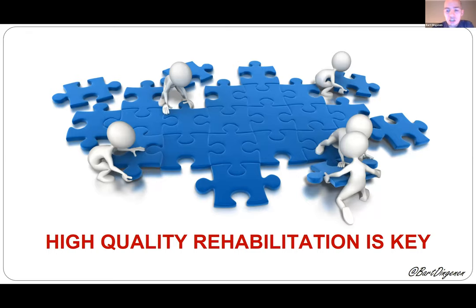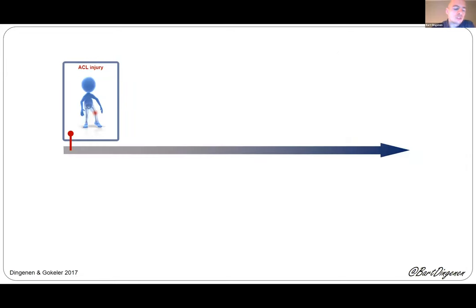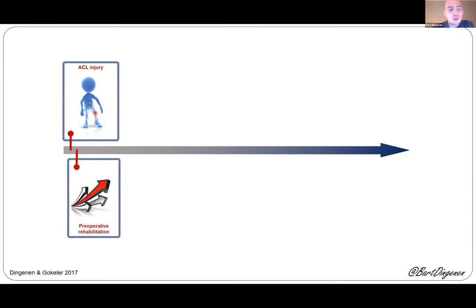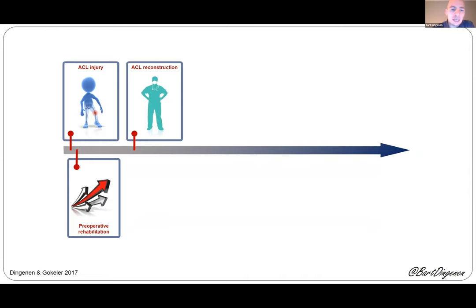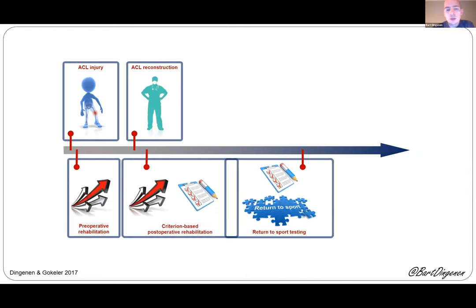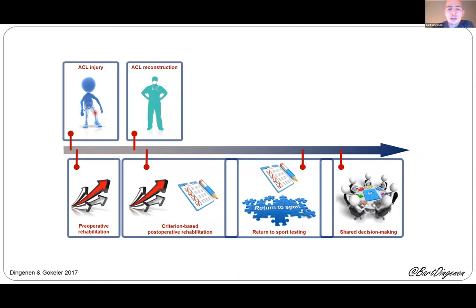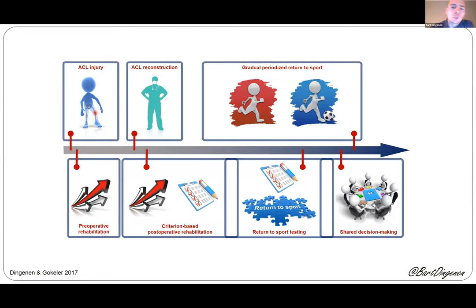High-quality rehab is a key factor in the whole process, where different people have to work together. We should consider the whole rehab process as a continuum, meaning that rehab already starts immediately after the injury with pre-op rehab, followed by reconstruction if needed, and then criterion-based post-op rehab with regular testing, working together as a team, followed by a gradual return to sport and follow-up.